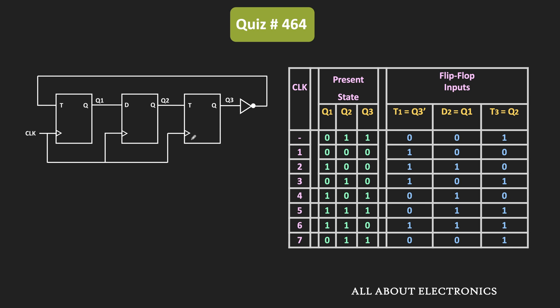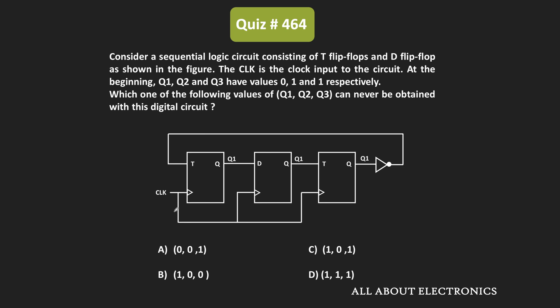So if you see over here, after the seventh clock pulse, the output of the circuit is same as the initial state. And then in the subsequent clock pulses, it will repeat this sequence. That means the output of the circuit will change in this sequence. If you see this sequence, the only output combination that is missing is 001. So we can say that for the given circuit, if 011 is the initial output, then the output combination 001 will never be achieved by this given digital circuit. So this is the correct answer.